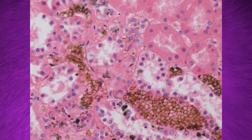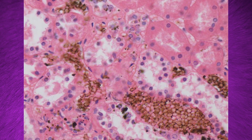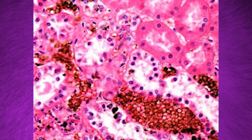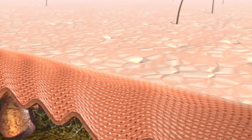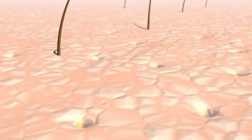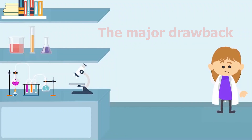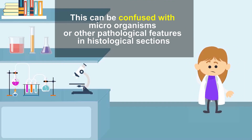Formalin pigment consists of brown colored granular particles present in formaldehyde-preserved tissue sections. It is associated with red blood cells and can be seen in both intra- and extracellular tissue. The major drawback is that it can be confused with microorganisms or other pathological features in histological sections.